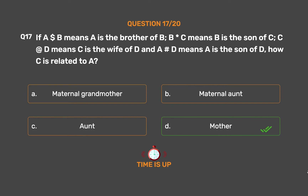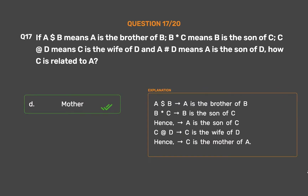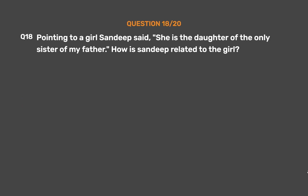A $ B means A is the brother of B. B * C means B is the son of C, hence A is also the son of C. C + D means C is the wife of D, hence C is the mother of A. So C is the mother of A.